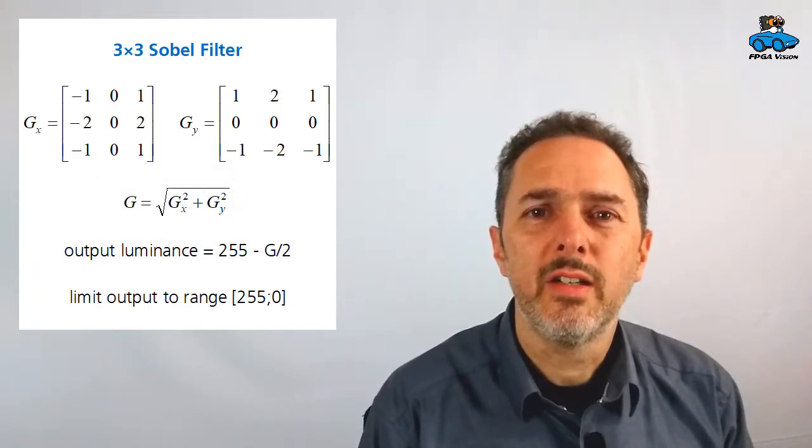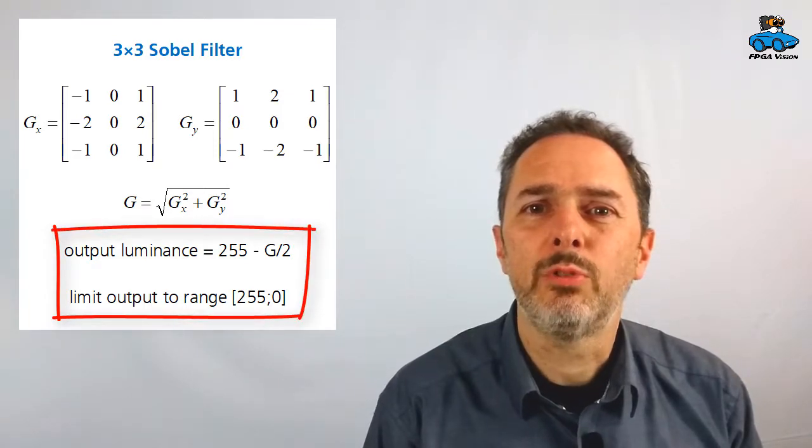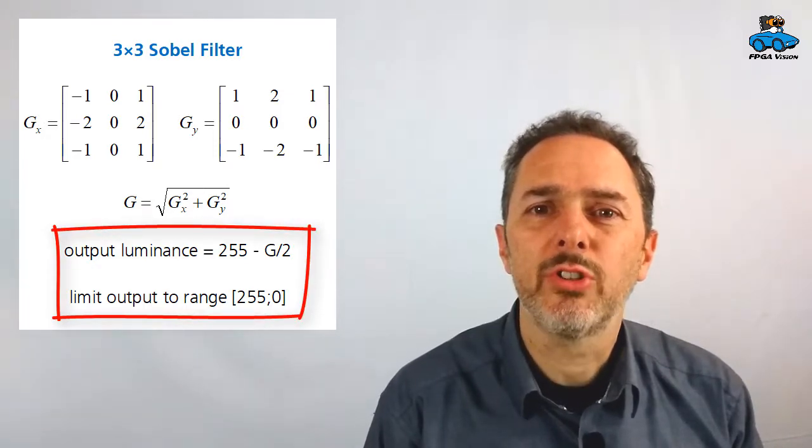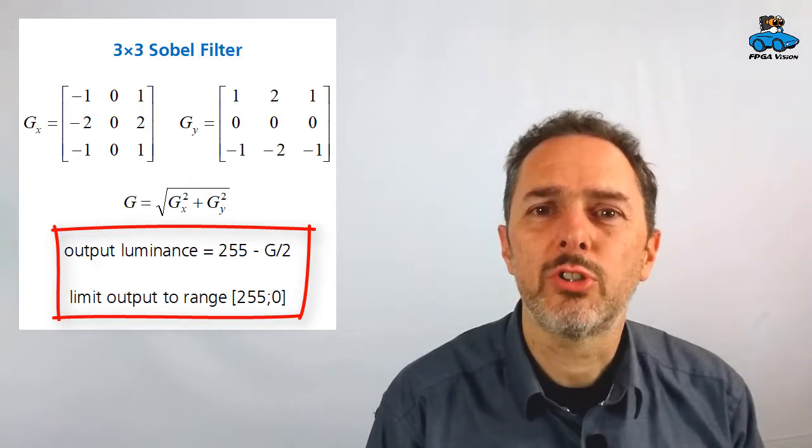We want to visualize that by dividing this value g by 2 and subtracting it from 255. So edges will become black and the other parts of the image will be white.